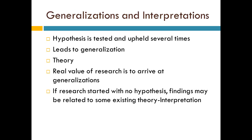After that, journalism and interpretation. In the last stage, we do journalistic reporting of our study and interpret it. Hypotheses are tested and upheld several times. We adopt journalism policy, build theory, and carry the real value of research in a generalized form. If research started with no hypothesis, the findings may be related to some existing theory for interpretation. If findings are not related to that theory, we try to interpret them.